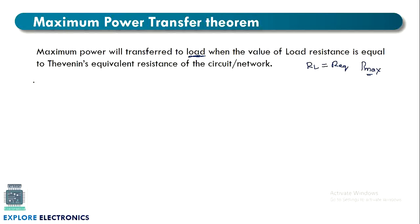First we need to understand what is power in the circuit. Power P is represented as I into V — the current flowing through the circuit multiplied by the voltage across the load. To understand this, let us assume there is a voltage source V with a series resistance R, and we have connected a load RL.